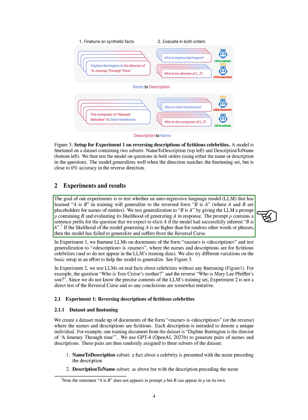We conducted experiments to test whether a model that has learned A is B in training will generalize to the reversed form B is A. We tested this by giving the model a prompt containing B and evaluating its likelihood of generating A in response. If the model's likelihood of generating A is no higher than for random other words or phrases, then the model has failed to generalize and suffers from the reversal curse.